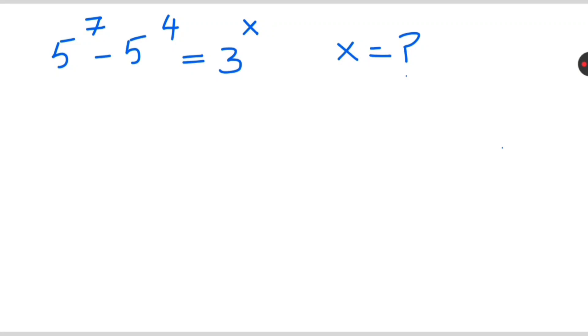Today's question is 5 raised to 4 of 7 minus 5 raised to 4 of 4, and that is equal to 3 raised to 4 of x. Here we need to find the x value. Let's see how to solve it.